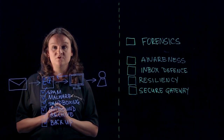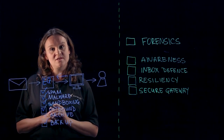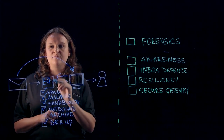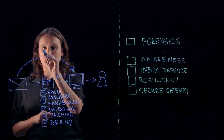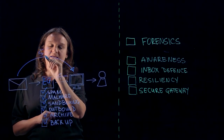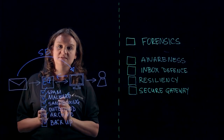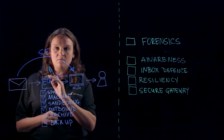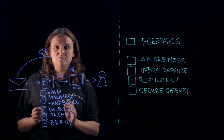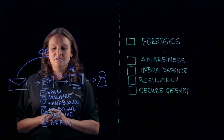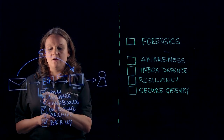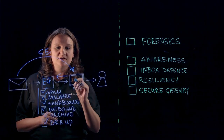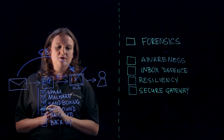Well, hackers think so too. That's why they started to use social engineering tactics to bypass your email gateway and deliver mail directly to users' inboxes. You may know these tactics as spear phishing attacks, business email compromise, or CEO fraud. What they all have in common is that they almost never use a malicious payload — the things your email gateway will be looking for. To the email gateway, this email looks legitimate and is delivered to your users' inbox.